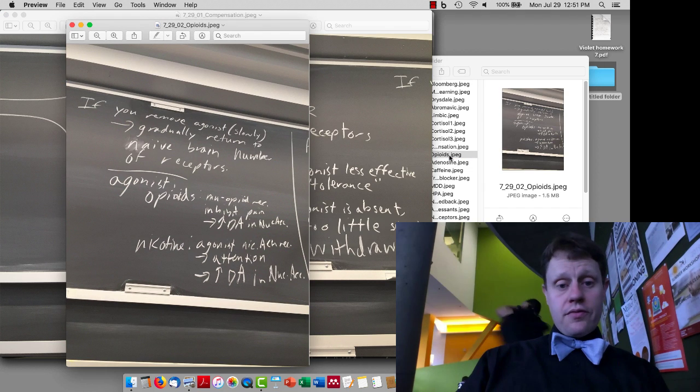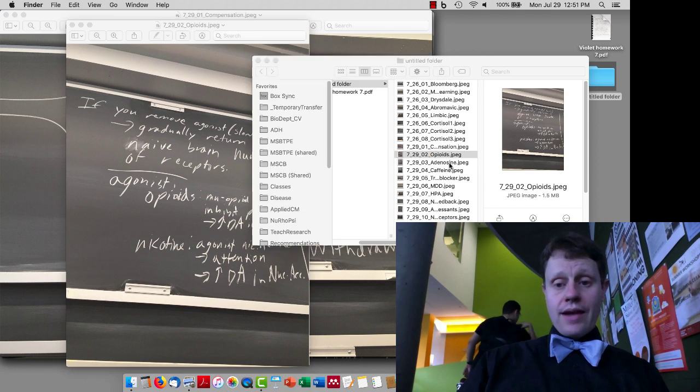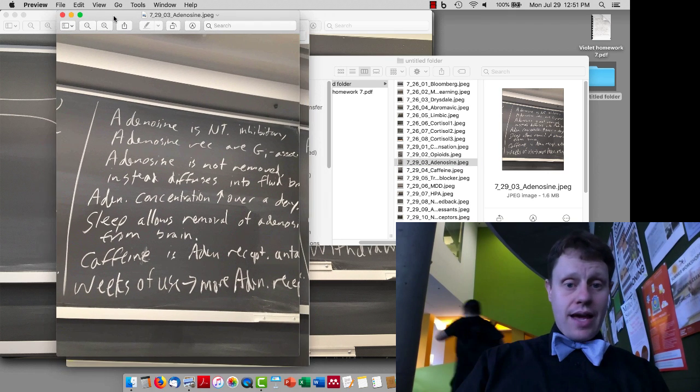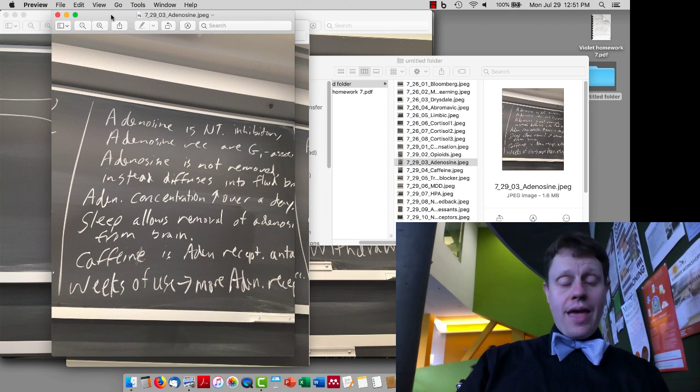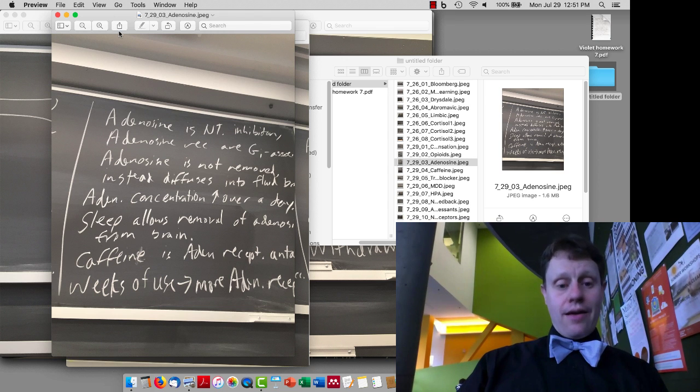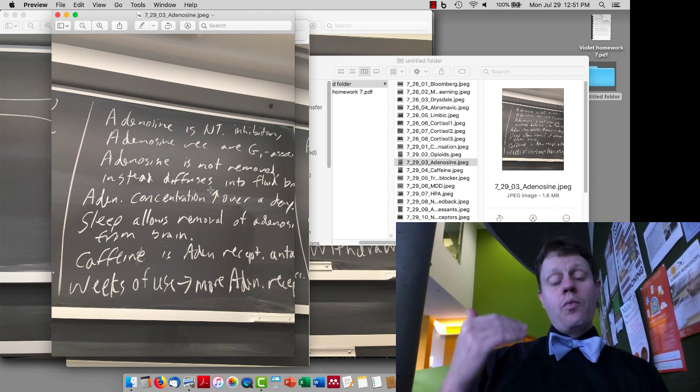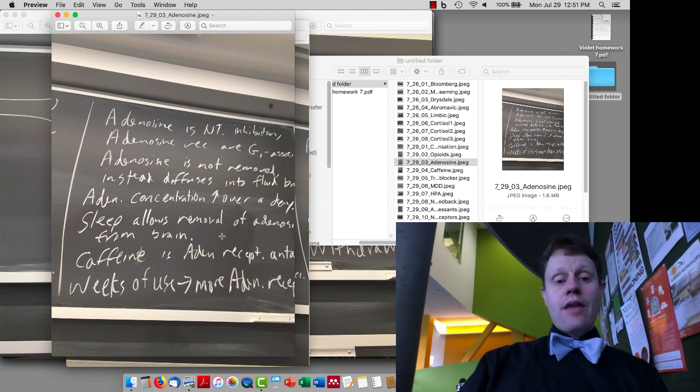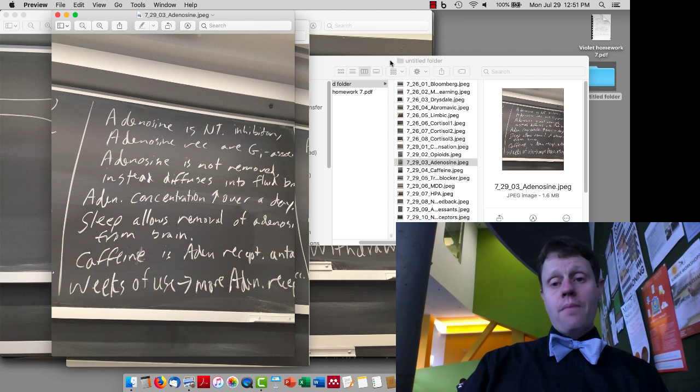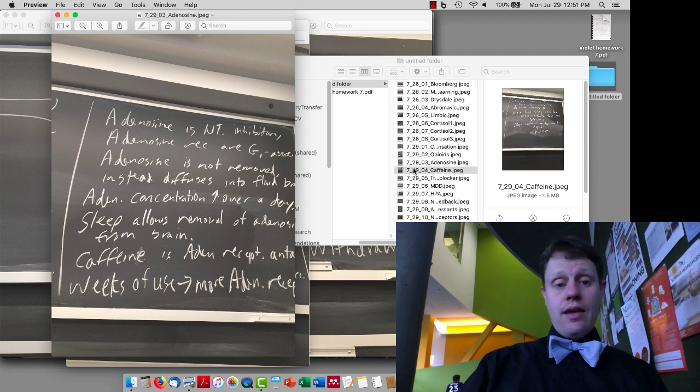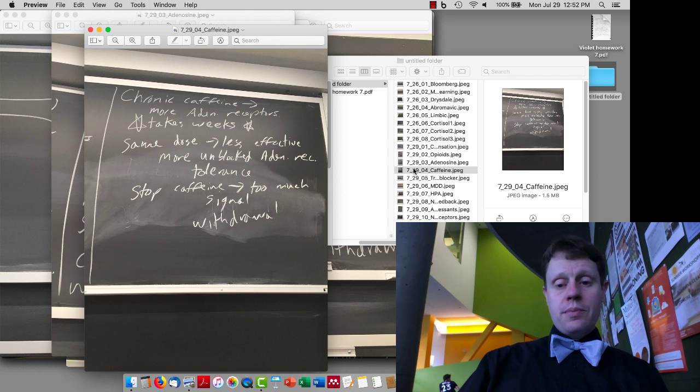We talked about other drugs, for example, opioids that have something similar going on where they act as agonists in different receptors. And then we talked about antagonists, in particular adenosine and the adenosine receptor antagonist. So unlike the agonist, which causes the removal of receptors, when you put in an antagonist, the cells compensate by putting in more receptors. So now there's more adenosine signal and it takes more caffeine to get a response. And then also when caffeine is taken away, then a person will feel very tired.